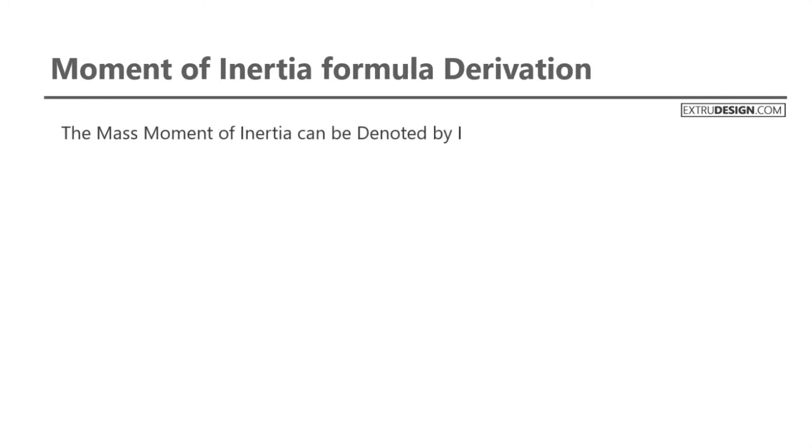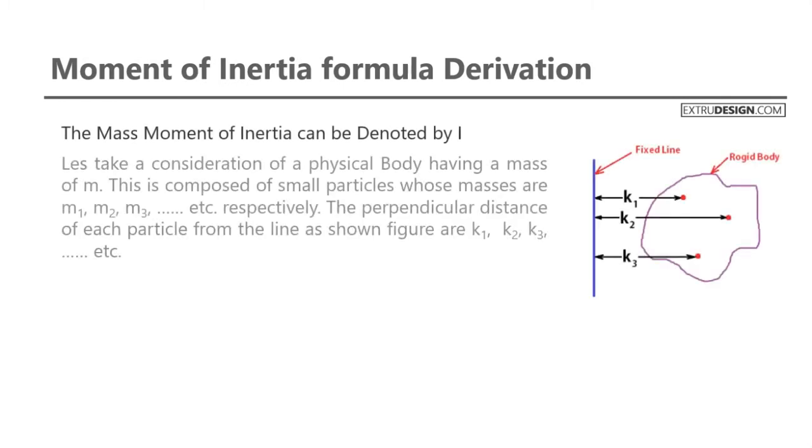The moment of inertia can be denoted by I. Let us take a consideration of a physical body having a mass of m. This is composed of small particles whose masses are m1, m2, m3, etc., respectively.